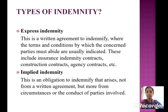Types of indemnity. Express indemnity: this is a written agreement to indemnify where the terms and conditions by which the concerned parties must abide are usually indicated. These include insurance indemnity contracts, construction contracts, agency contracts, etc. Implied indemnity: this is an obligation to indemnify that arises not from a written agreement but from circumstances or the conduct of parties involved.